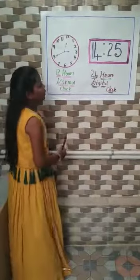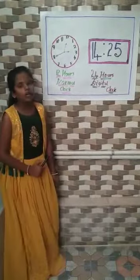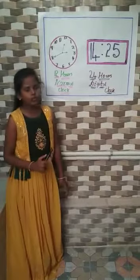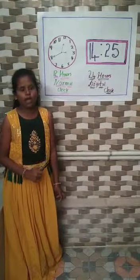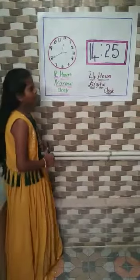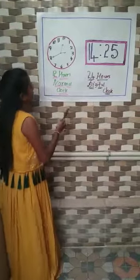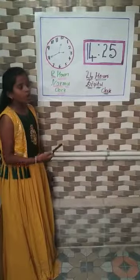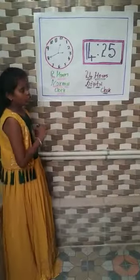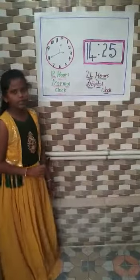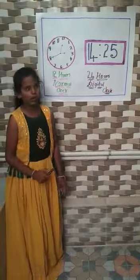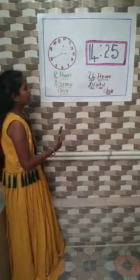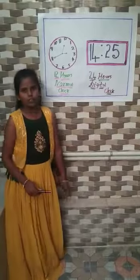Here, in the 24-hour clock, it will come 1, 2, 3, 4, 5, 6, 7, 8, 9, 10, 11, 12. After 12, there is no 1 in the 24-hour clock. Directly, it will come 13.